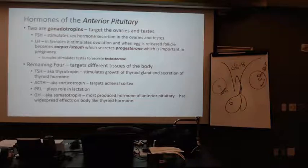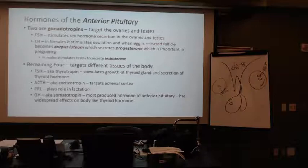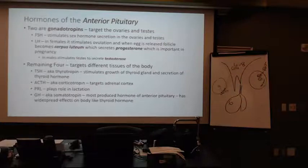The corpus luteum helps secrete progesterone, which hopefully helps get that uterine lining ready for implantation so that the offspring can survive. The reason I mention this is that the hypothalamus is the primitive region of the brain, located next to other primitive regions whose goal is strictly keeping this species alive and propagating. Do you see the connection there?